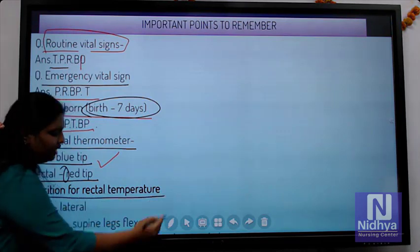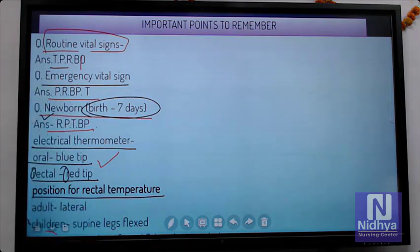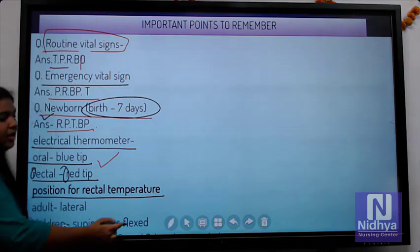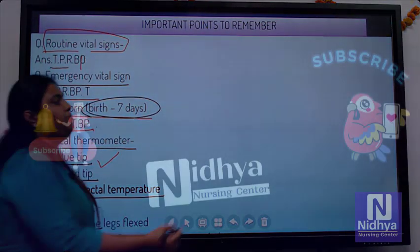Position for rectal temperature. Adult - lateral position. Coming to children, it can be supine legs flexed or it can be prone as well.